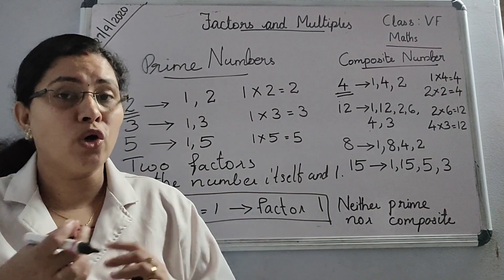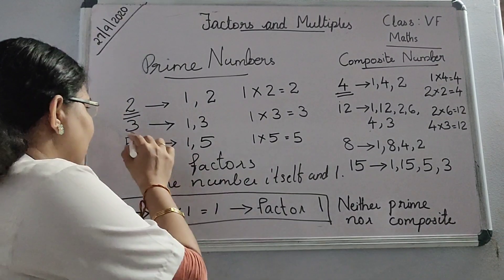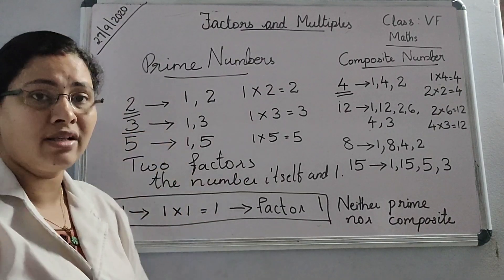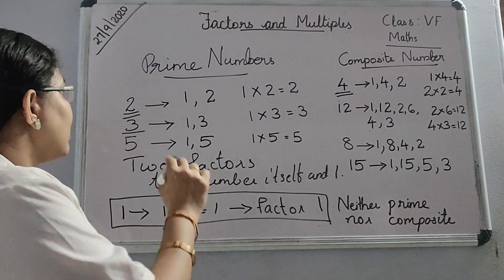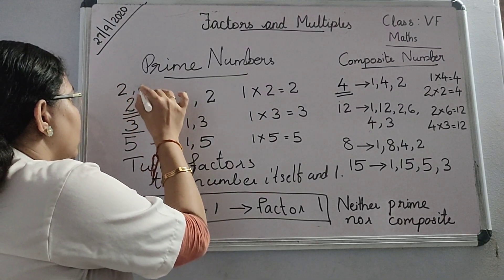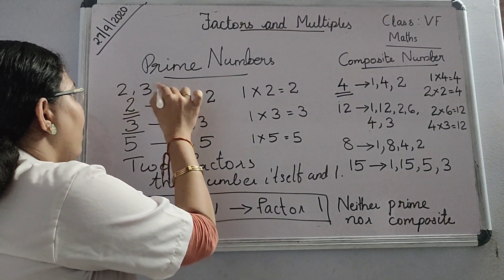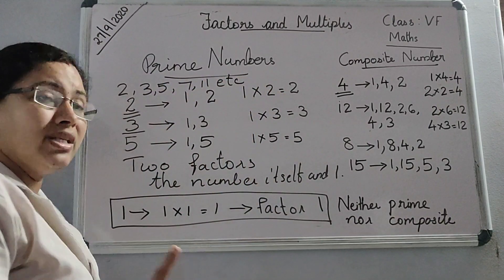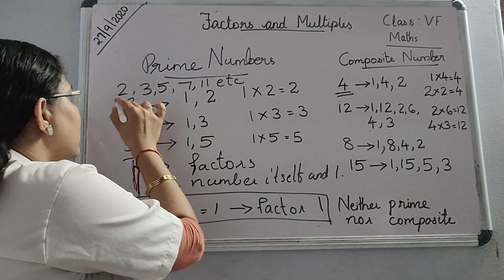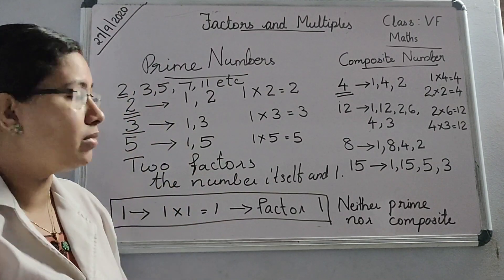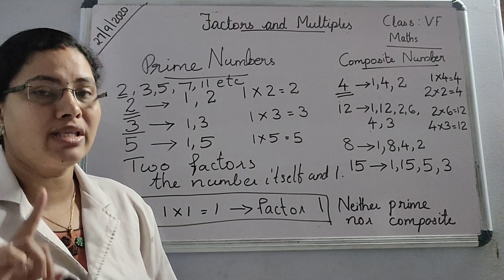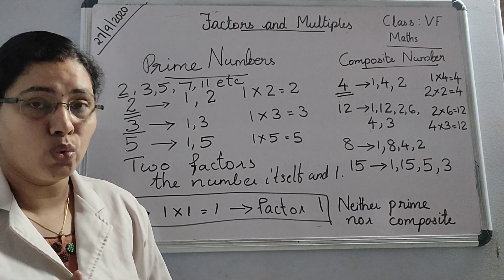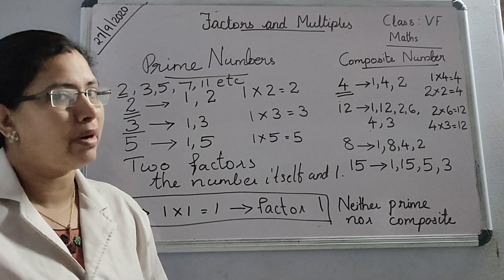Because when you check the list of prime numbers — 2, 3, 5, 7, 11, etc. — all other prime numbers are odd numbers. There is only one even prime number, which is 2. So 2 is the smallest prime number and also the only even prime number.